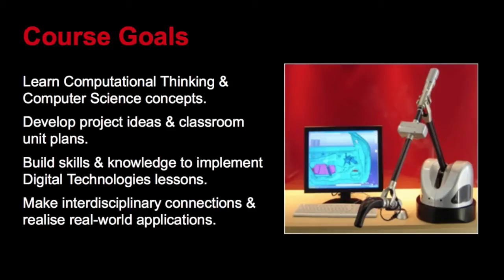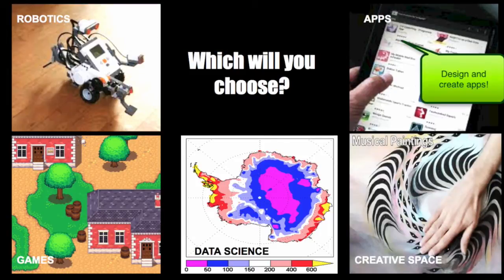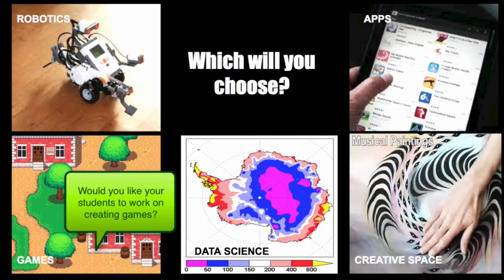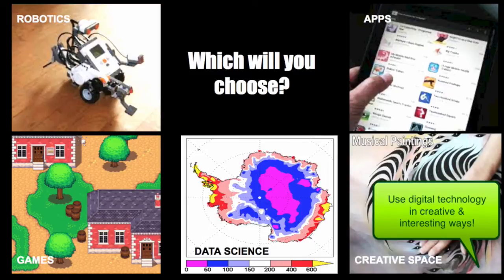In this MOOC, we've prepared content and lesson pathways around a series of project themes. These include robotics, apps, games, data science and creative spaces. You'll be able to select one of these themes, then follow lessons, complete tasks and share ideas with peers who've also selected this theme. And you'll be able to work through this at your own pace.